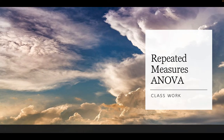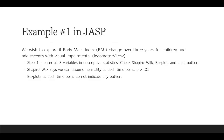Let's do some repeated measures ANOVA classwork. I've got two problems here for you that we'll step through just like we did in the lecture example. In the first example, we're going to use that same data set from the lecture video. This time we wish to explore if body mass index, or BMI, changes over three years for children and adolescents with visual impairments.